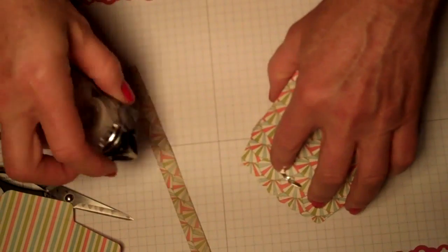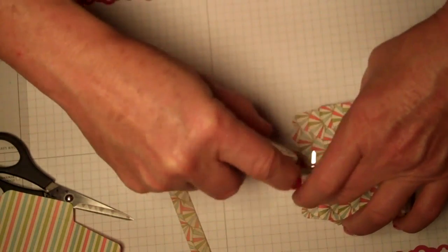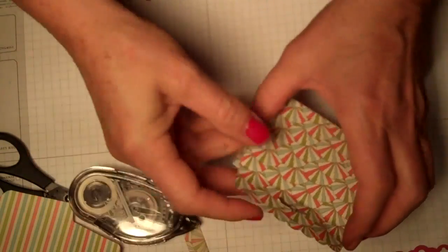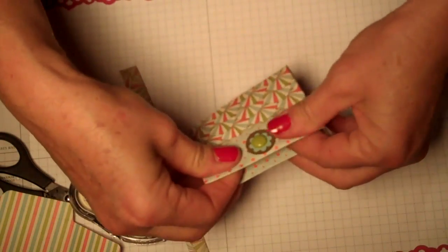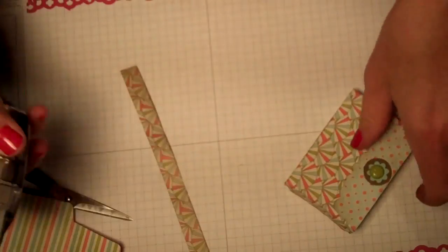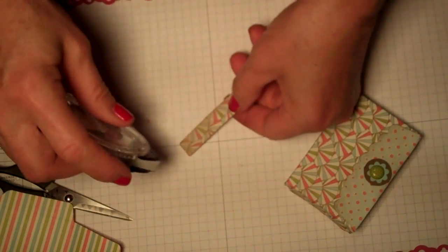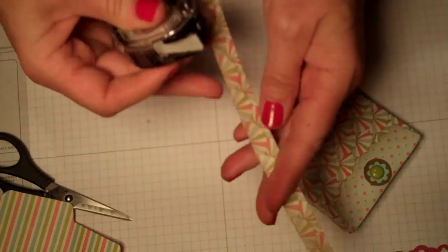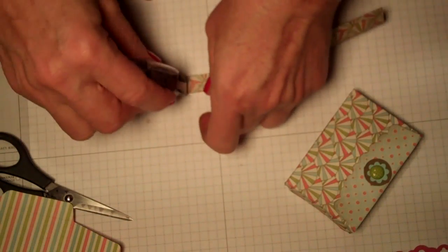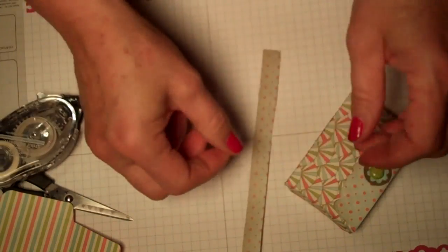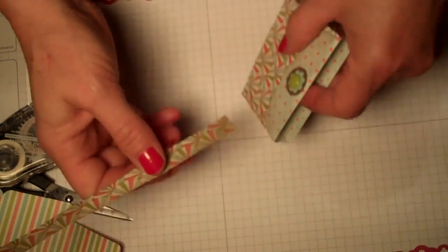And I'm gonna adhere it down. Next is to add the strap, and you want to put this on the pattern that you want to be outside because you're gonna tuck it in and put it on the inside, right in here.